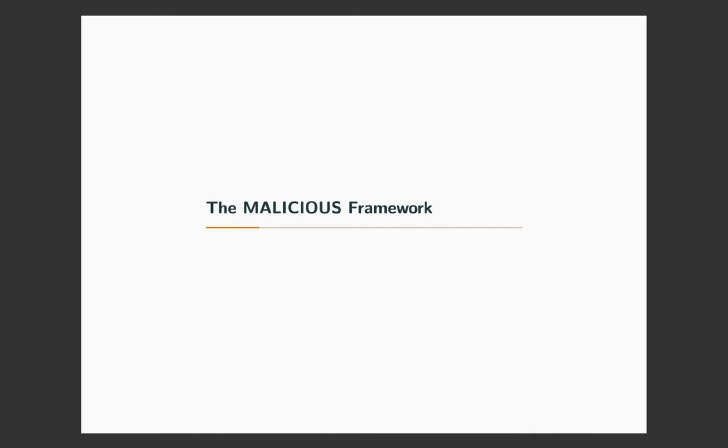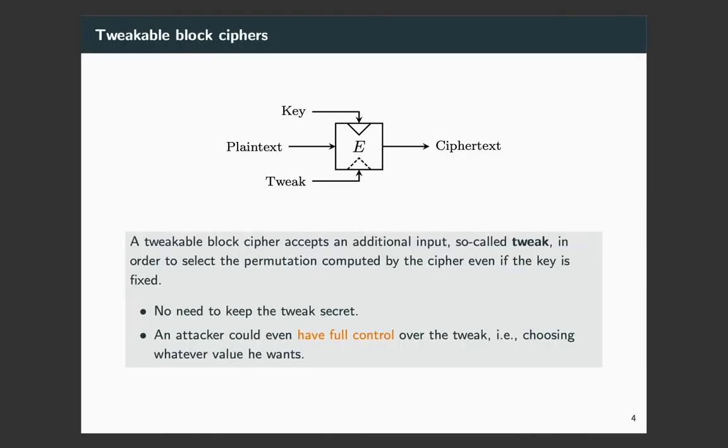Now, I will explain the malicious framework. This framework uses three essential components. The first one is tweakable block ciphers. Compared to a block cipher, a tweakable block cipher has an additional input tweak in order to select the permutation computed by the cipher even if the key is fixed. For the usage of tweak, there is no need to keep the tweak secret so that an attacker could know the exact value of the tweak used in an encryption. Even more, the attacker could have full control of the tweak such that he can choose whatever value he wants of the tweak.